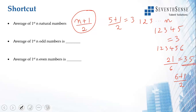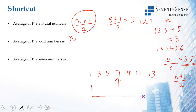The average of the first n odd numbers is simply n. For example, the first 7 odd numbers are 1, 3, 5, 7, 9, 11, 13. Since there are 7 consecutive odd numbers and 7 is odd, the average is the middle number, which is 7. Hence the average of the first n odd numbers equals n.